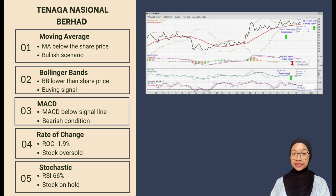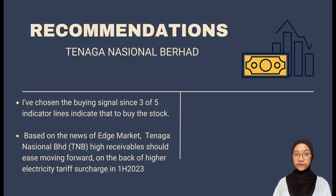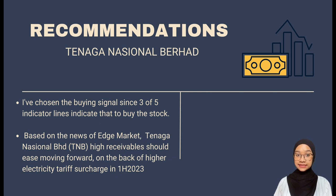From the chart, the Stochastic for TNB is 66%, which is more than 20% but not more than 80%, so we consider holding the stock and deciding in the future whether to buy or sell. For the recommendation, based on the analysis, the buying signal is chosen since 3 out of 5 indicators suggest buying. On 16 January 2023, the investor should purchase equities, and if the market price declines, they may sell again. Based on market news, TNB's high receivables are moving forward on the back of higher electricity demand.